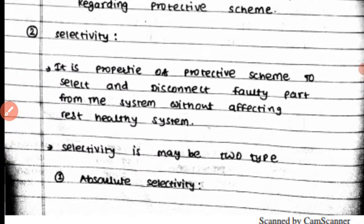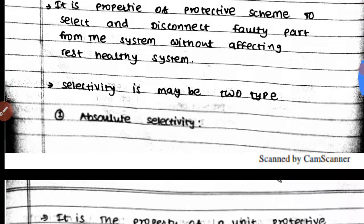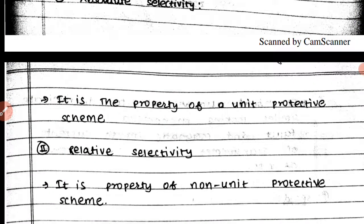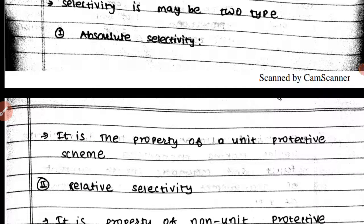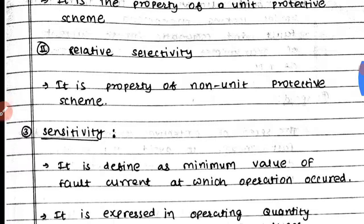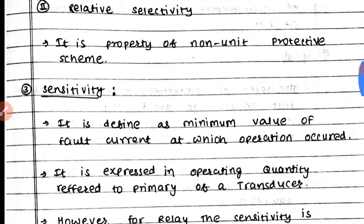Selectivity may be of two types: absolute selectivity and relative selectivity. These two terms will be explained further in this video.